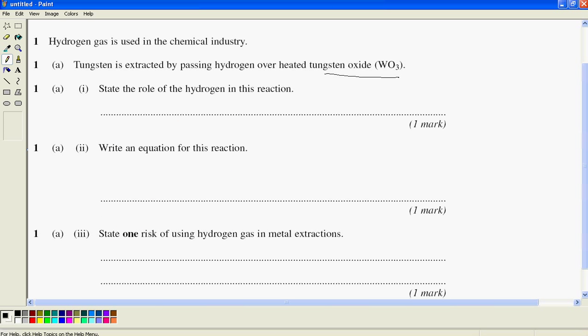This is question 1A from the 2010 paper unit 1. If we look at this question, we're looking at the extraction of tungsten from tungsten oxide. The big clues, if you don't know, is state the role of hydrogen in this reaction and it gives us a number of different things to look at.